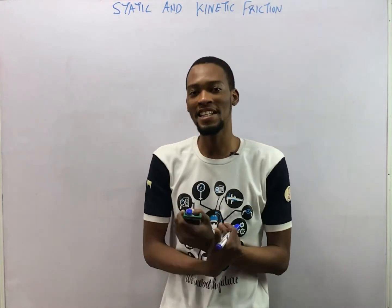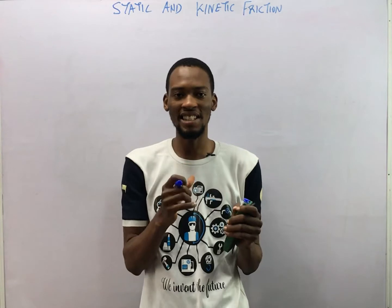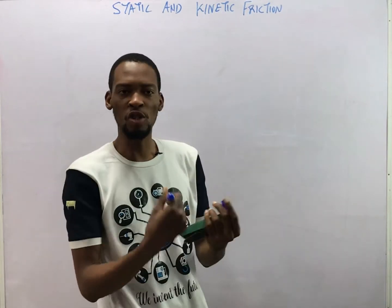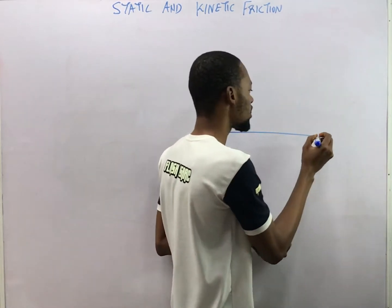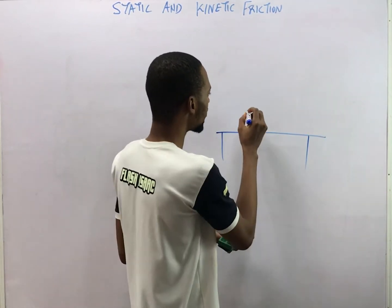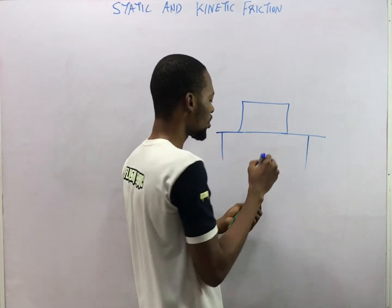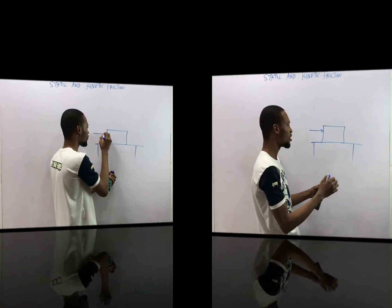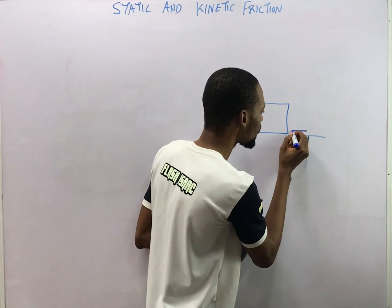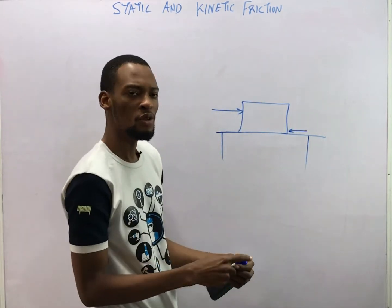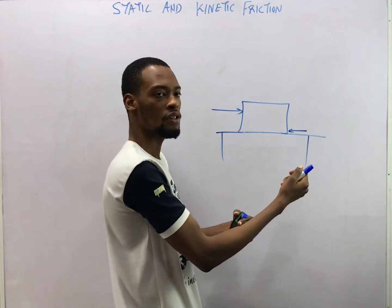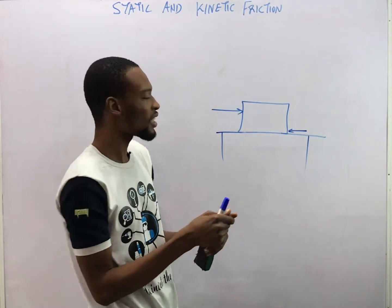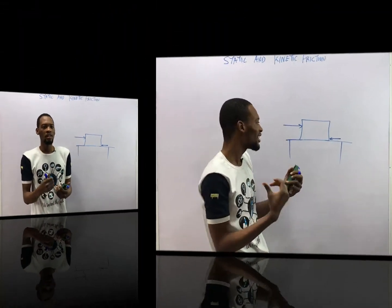Hello, I am Flash Isaac. Today I'll be taking you through static and dynamic friction. A few days ago I released a video on friction where I explained that friction is a force opposing relative motion. This is a surface and this is a block. If you are trying to slide this block across this surface, you need a force to overcome the resistance — that's what we call frictional force.